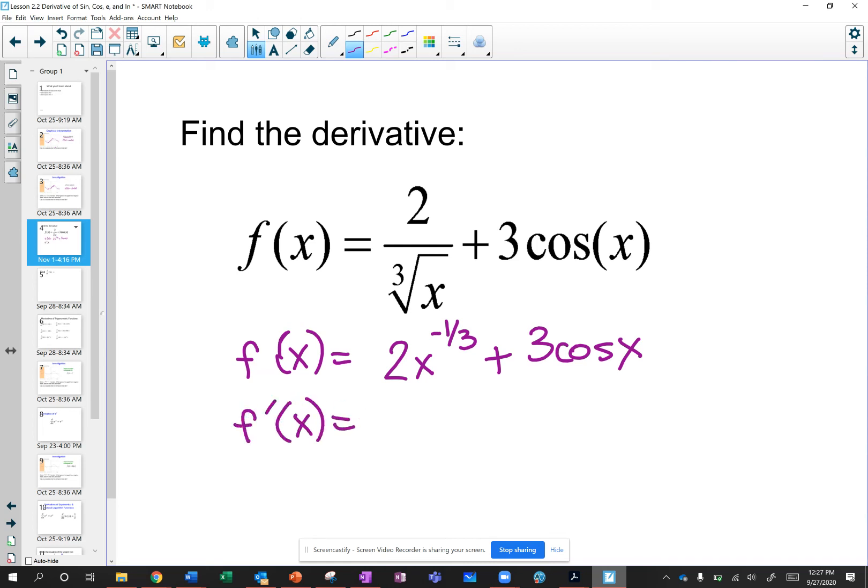So to take the derivative of a power rule, we're bringing that to the front. So it's negative 2 thirds and we subtract 1. So that would be negative 4 thirds. And we know that the derivative of cosine is going to be negative cosine. So it would end up being a negative 3 sine of x.